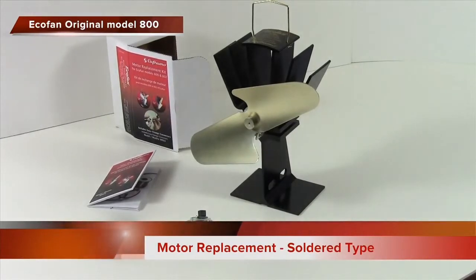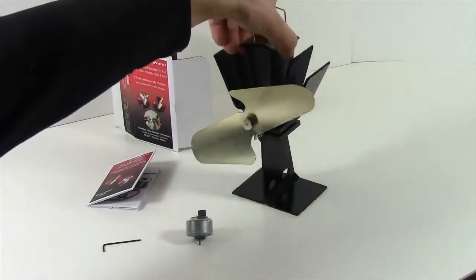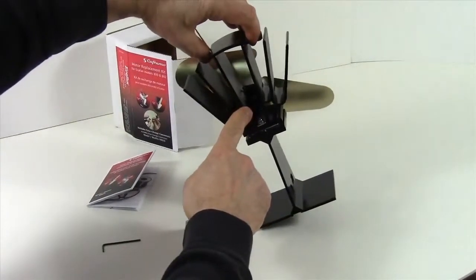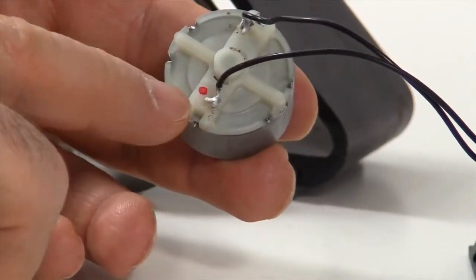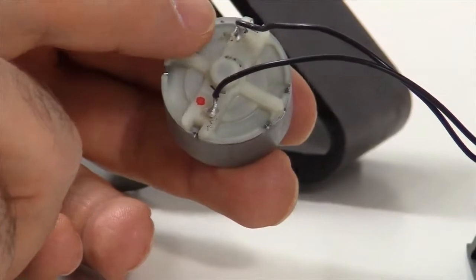Today we are replacing the motor on an EcoFan model 800. This procedure is valid if the back of your motor looks like this, and we can see that one wire is connected to a terminal with a red dot and the other black wire is connected to a terminal that's unmarked.